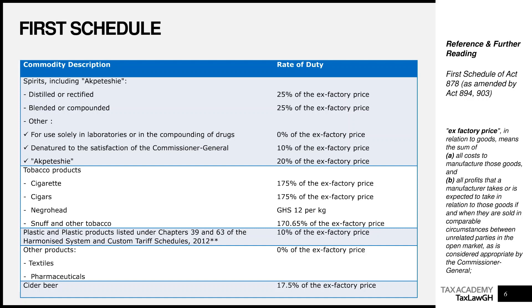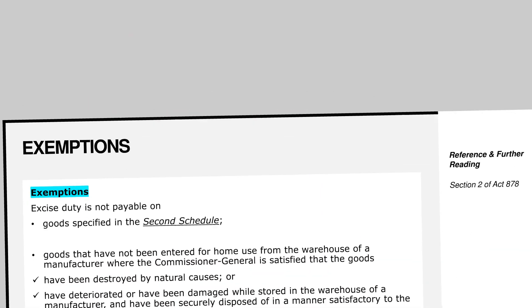This is the full list of items that attract excise duty. If I did not mention an item, it does not attract excise duty. This is very different from VAT: for VAT, if you are not on the exempt list then VAT applies to you; for excise duty, if you are not on this list then excise duty does not apply to you. For example, shoes manufactured in Ghana do not attract excise duty because they are not on the First Schedule. Similarly, education services are not on the excise duty schedule, so they don't attract excise duty — it's a very restrictive tax.